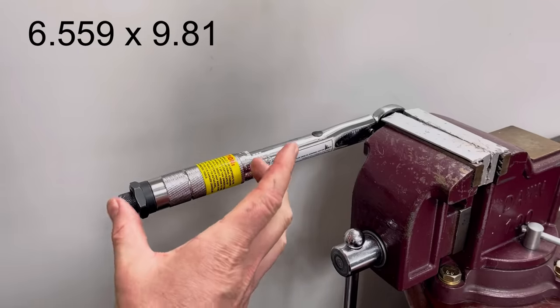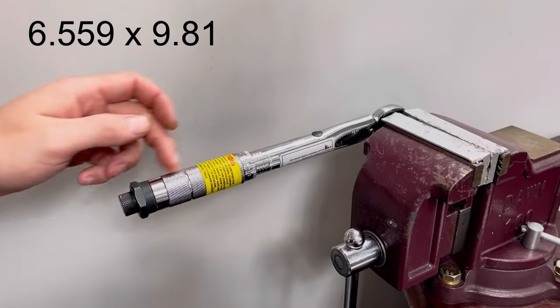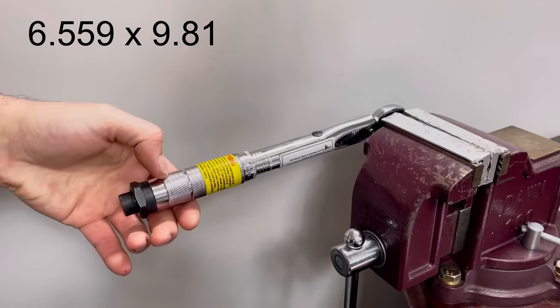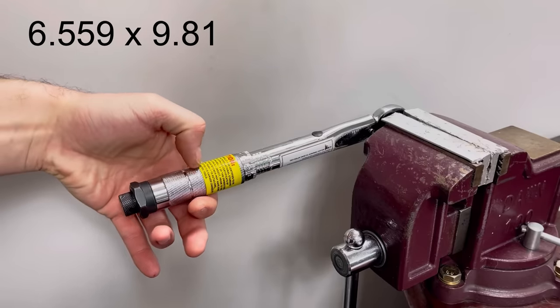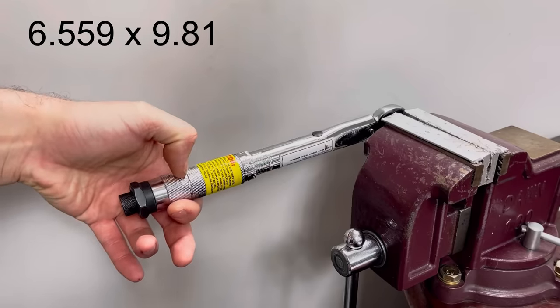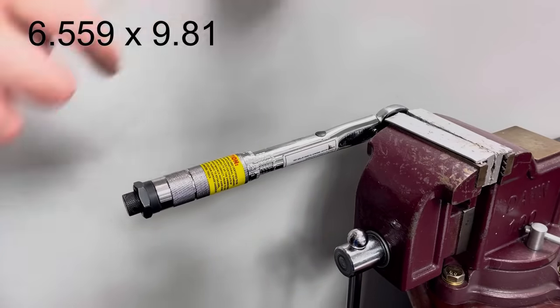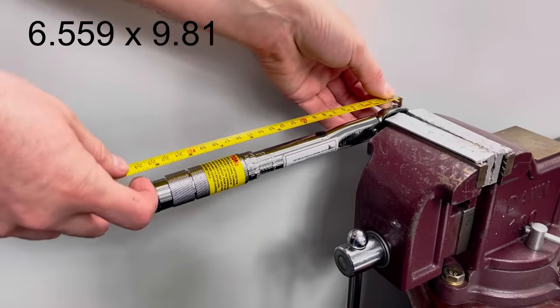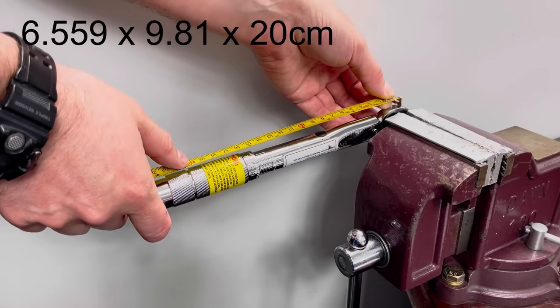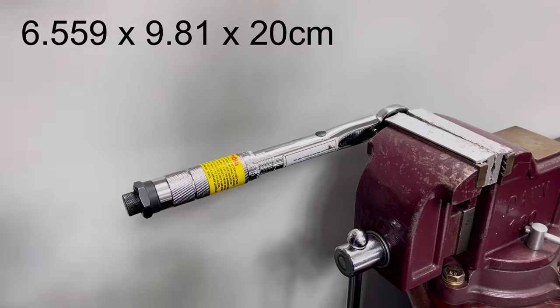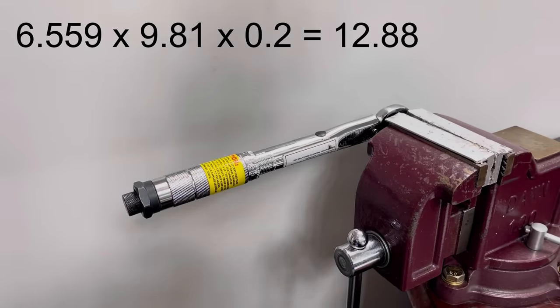It's really simple, I recommend finding halfway down the actual handle bit that you hold, so let's just say this middle bit between the yellow label and this first clean bit without any knurling, and we want to measure from the middle of the square drive down to that point, so in this case we're 20 centimeters, and then we just convert that to meters. That's 0.2 meters.